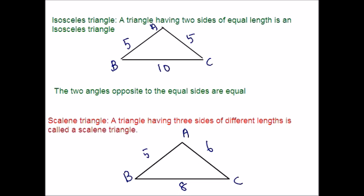So far we have discussed types of triangle based on sides. Now there are three more types, and those types are based on angles. Based on angles, the three main types are acute, obtuse, and right angle. Let me start with the first one.